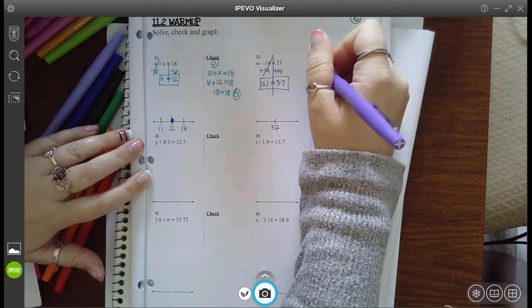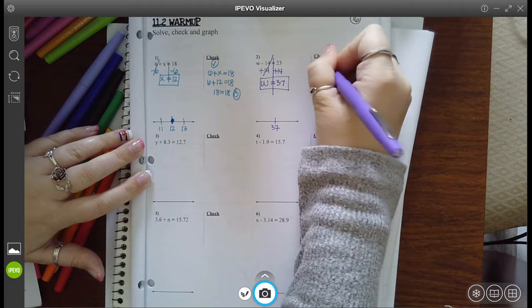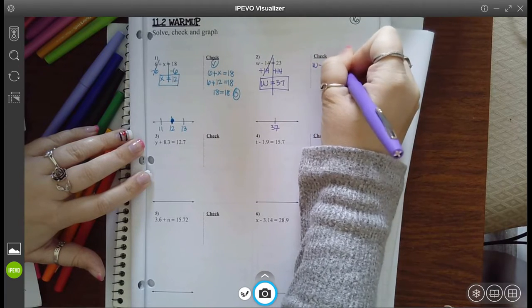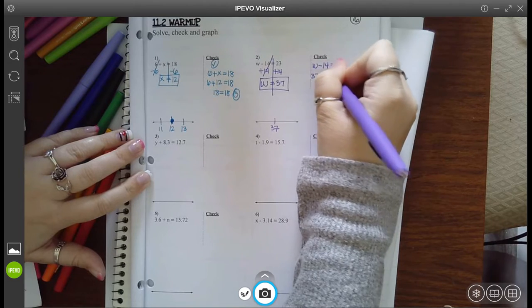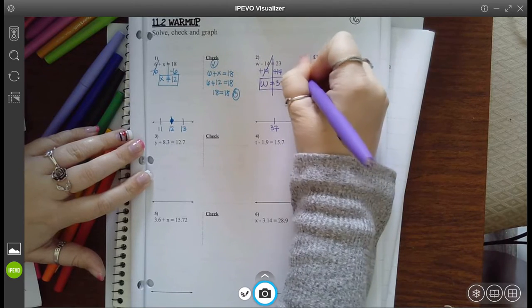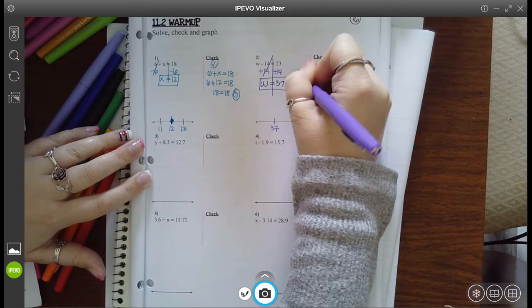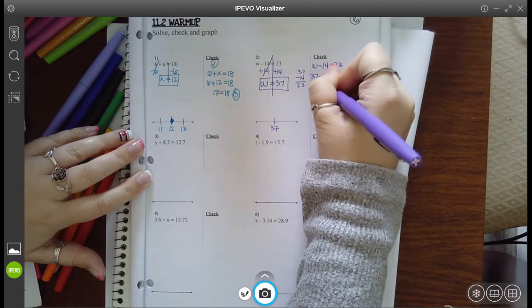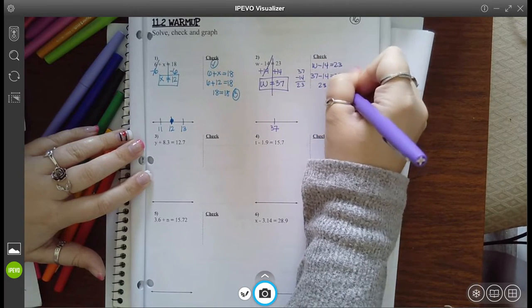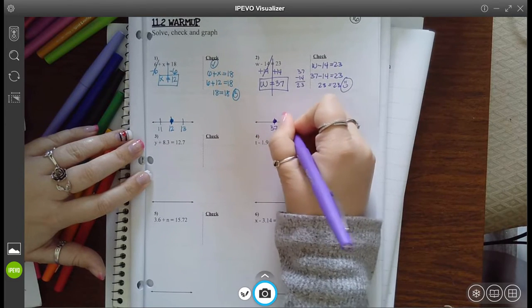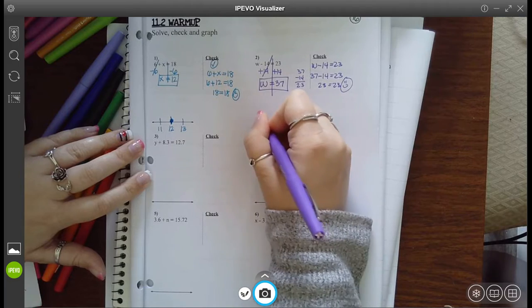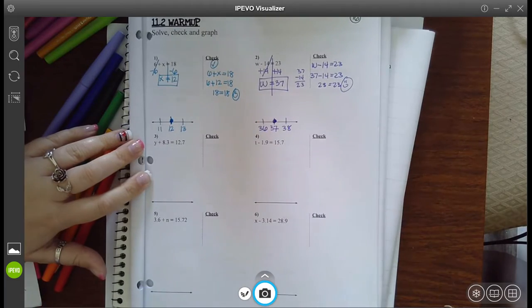But before I set that in stone, let's check. W minus 14 equals 23. I think w is 37. So when you check 37 minus 14, you get 23. And 23 equals 23 is a true statement. So yes, 37 was indeed the correct answer. One bigger, one smaller, and there's your graph.